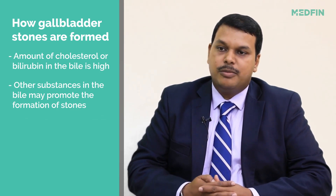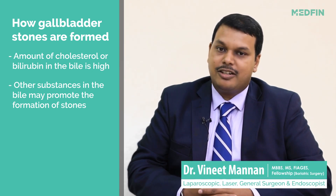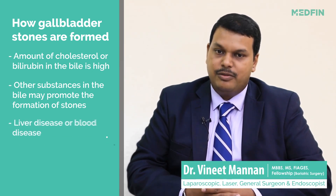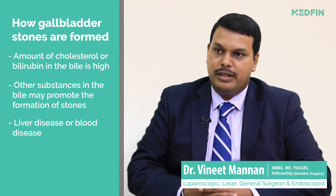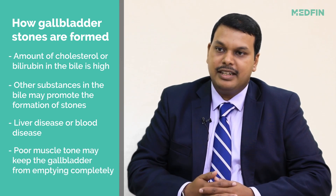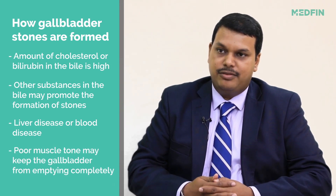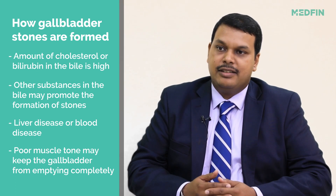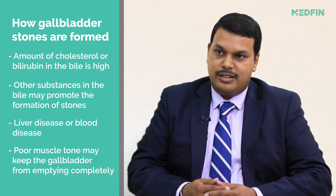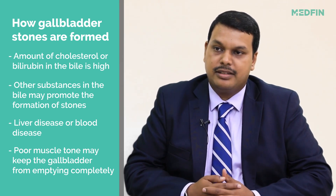The most common stones that we find in our country are cholesterol stones. There are also pigment stones, which come from breakdown of blood pigments, commonly seen in conditions like hereditary spherocytosis, thalassemia, and other blood disorders where the blood breaks down and the breakdown products clump with each other, forming stones in the gallbladder.